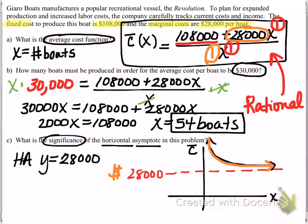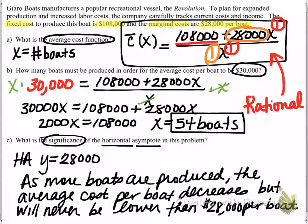In other words, as we produce more boats, as I move here to the right side, and I cruise along on the right-hand side, moving to the right, as I produce more boats, my average cost will never be below 28,000 dollars per boat. So as more boats are produced, the average cost per boat decreases, but will never be lower than 28,000 dollars per boat. So that's the significance of our horizontal asymptote in this situation.